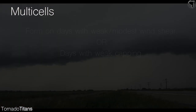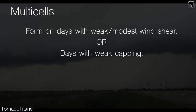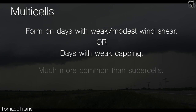Typically, multi-cell clusters happen in environments with modest wind shear and/or weak capping. Multi-cell storms occur more frequently than supercells, and typically they occur in less favorable environments than those which support supercells.